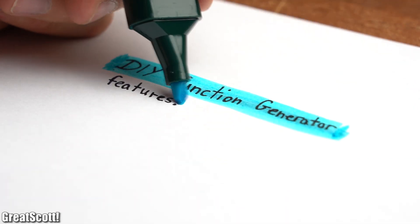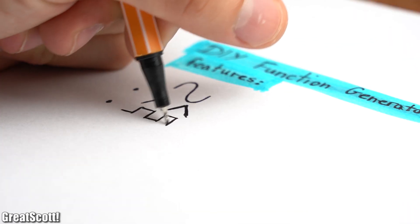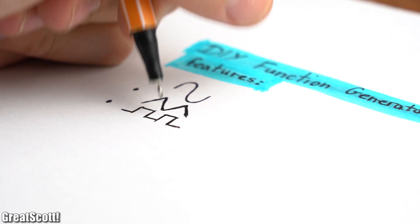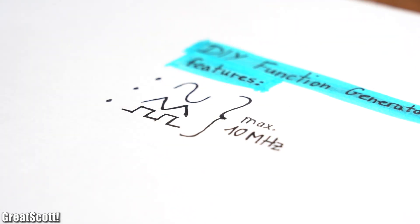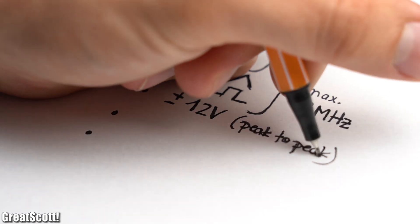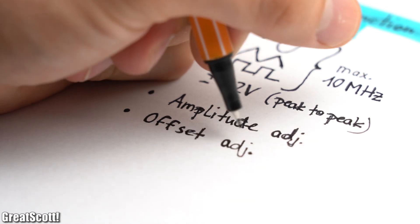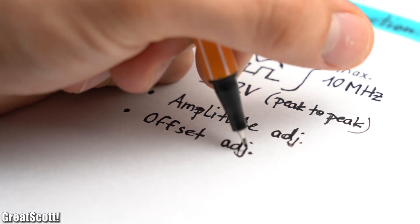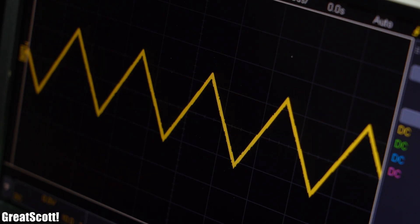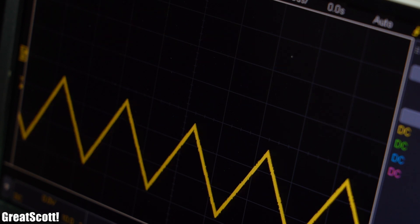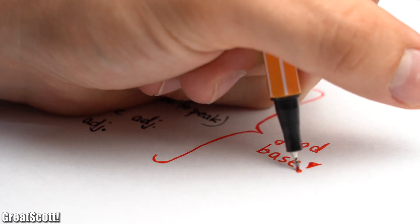First off, I had to define what features my DIY function generator should come with. Obviously it should be able to provide a sine, triangle and square voltage with a frequency of up to 10 megahertz and a peak-to-peak voltage from minus to plus 12 volts. The amplitude of the voltage also needs to be adjustable, as well as the offset for this voltage, which means it should be able to provide an AC voltage as well as a positive or negative DC voltage. I think those features are a decent base for a good function generator.